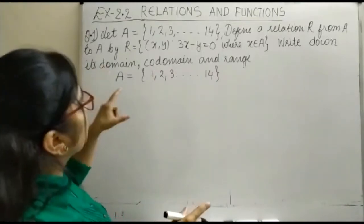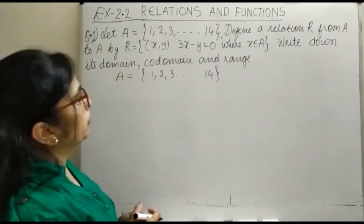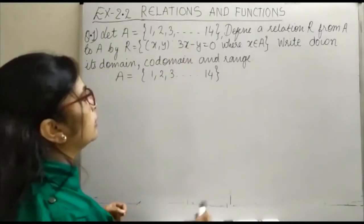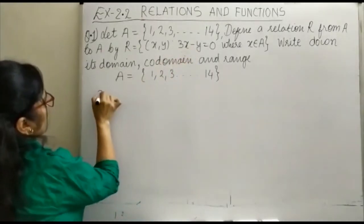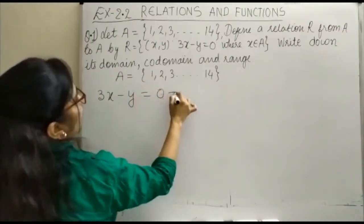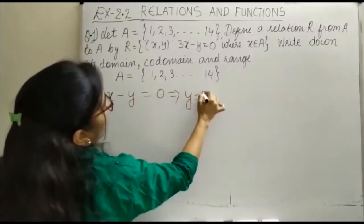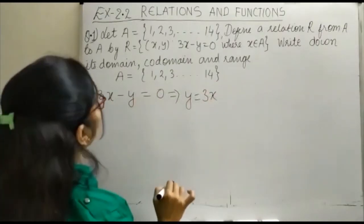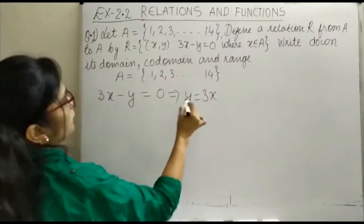Now, by R is equal to (x,y), order pair x,y, such that 3x minus y is equal to 0. You can see here, 3x minus y is equal to 0 implies y is equal to 3x. आपको order pair निकाल लेते हैं, ठीके.